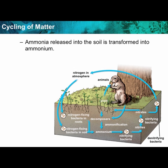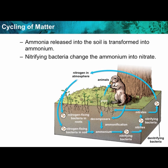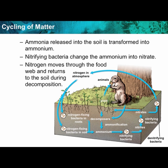Ammonia released into the soil is transferred into ammonium. Nitrifying bacteria then change the ammonium into nitrate. Nitrogen moves through the food chain mainly in the form of protein, and returns to the soil during decomposition.